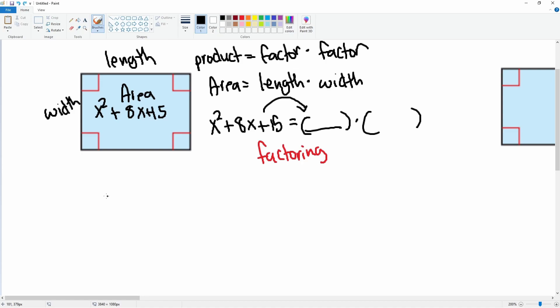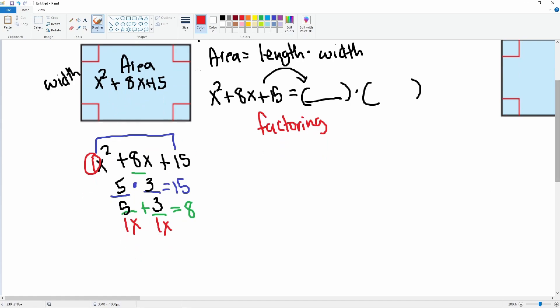We have x² + 8x + 15. Let's do our traditional method: blank times blank equals 15, and blank plus blank equals 8. That looks like the numbers 5 and 3. Then we divide by the 1x, so the factors are simply (x + 5) and (x + 3).